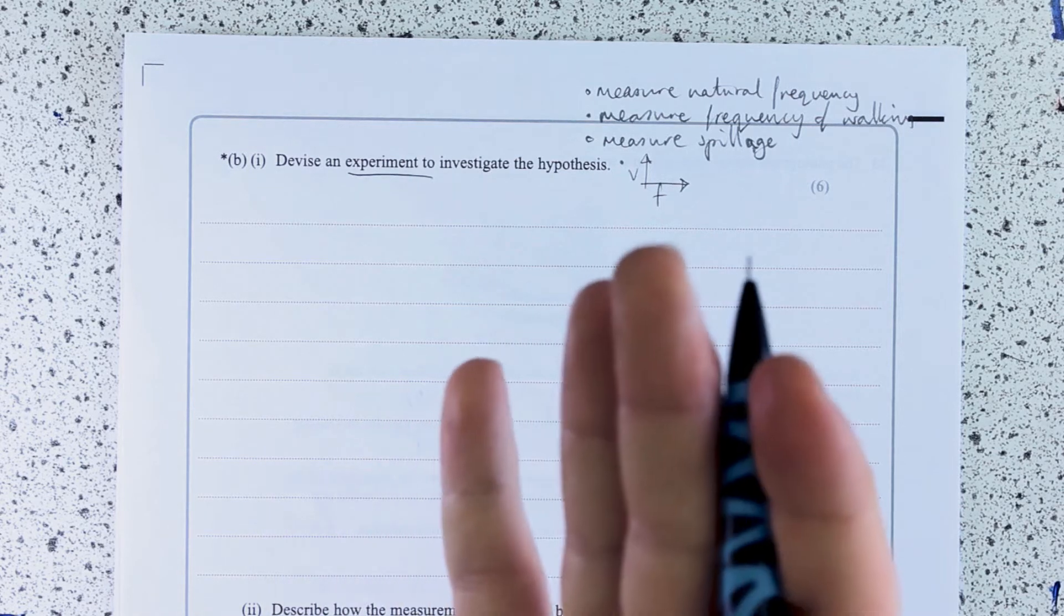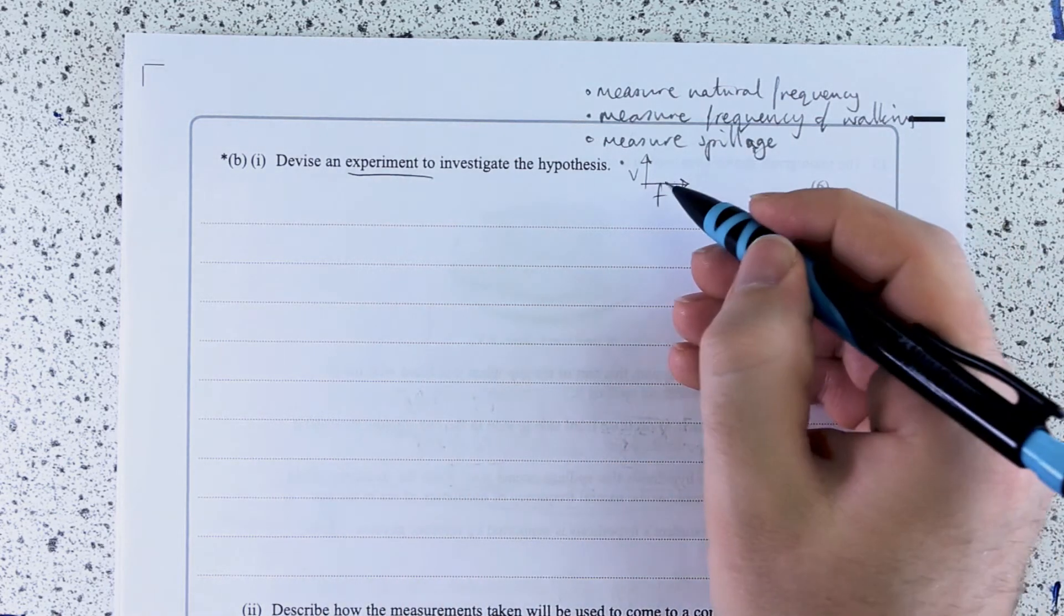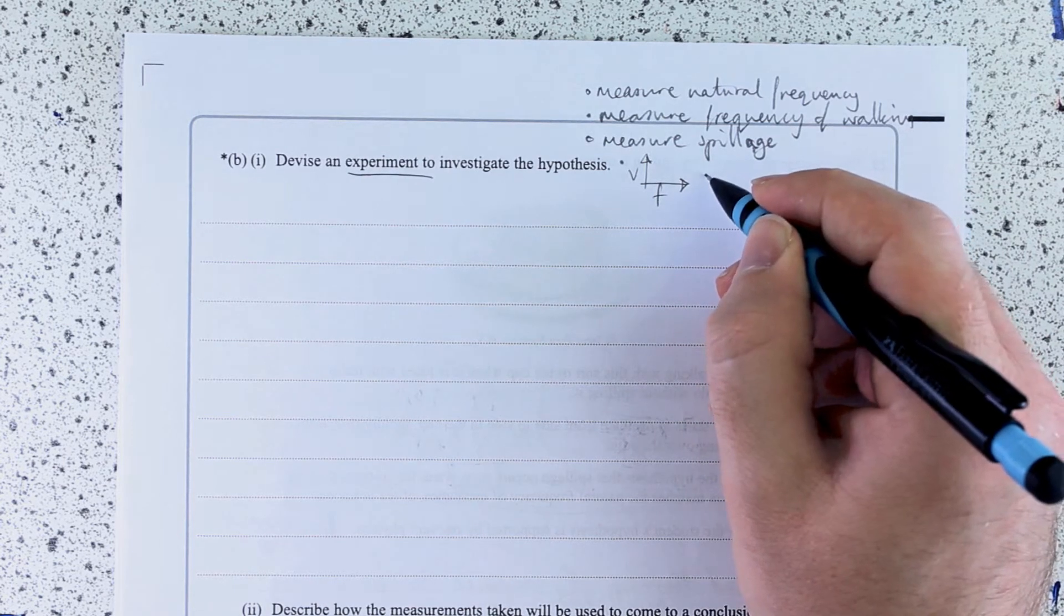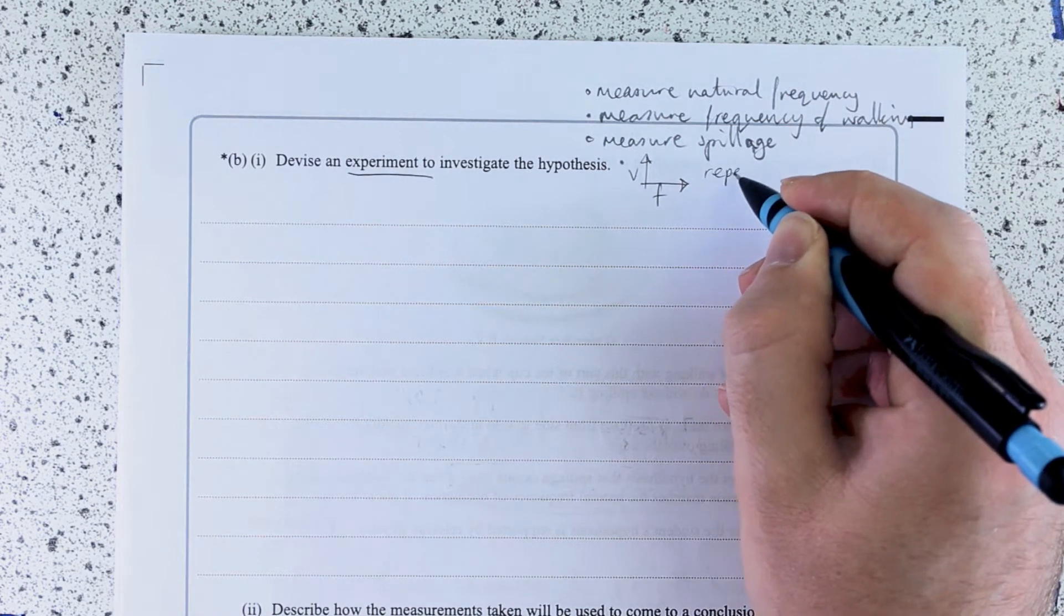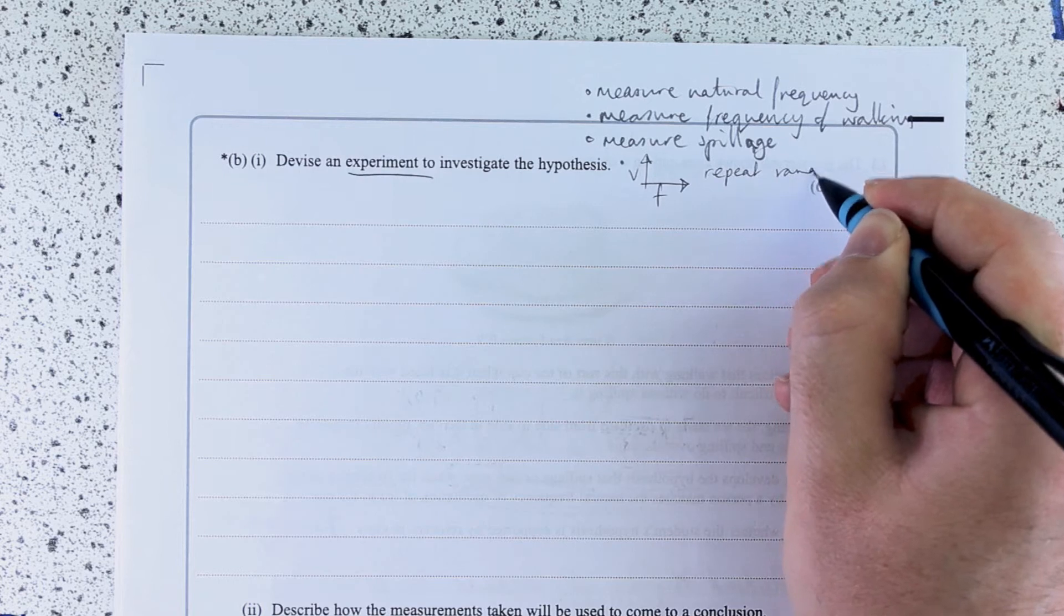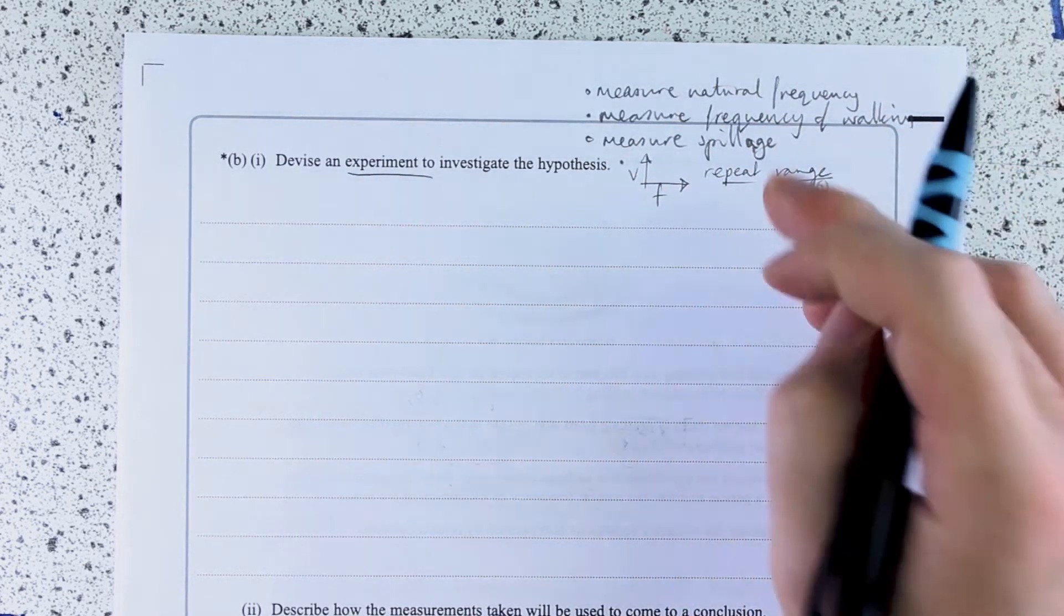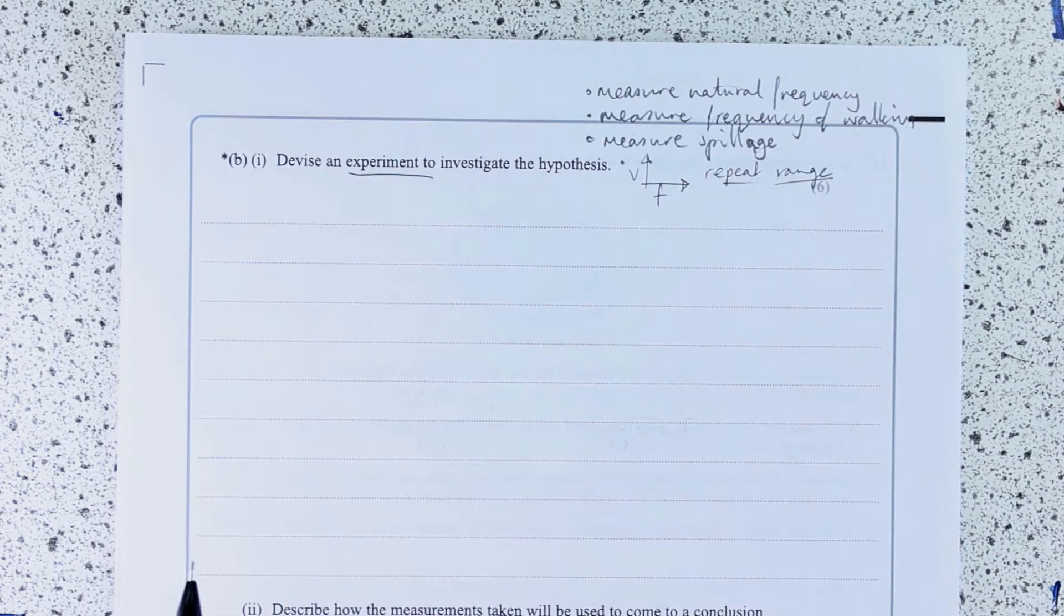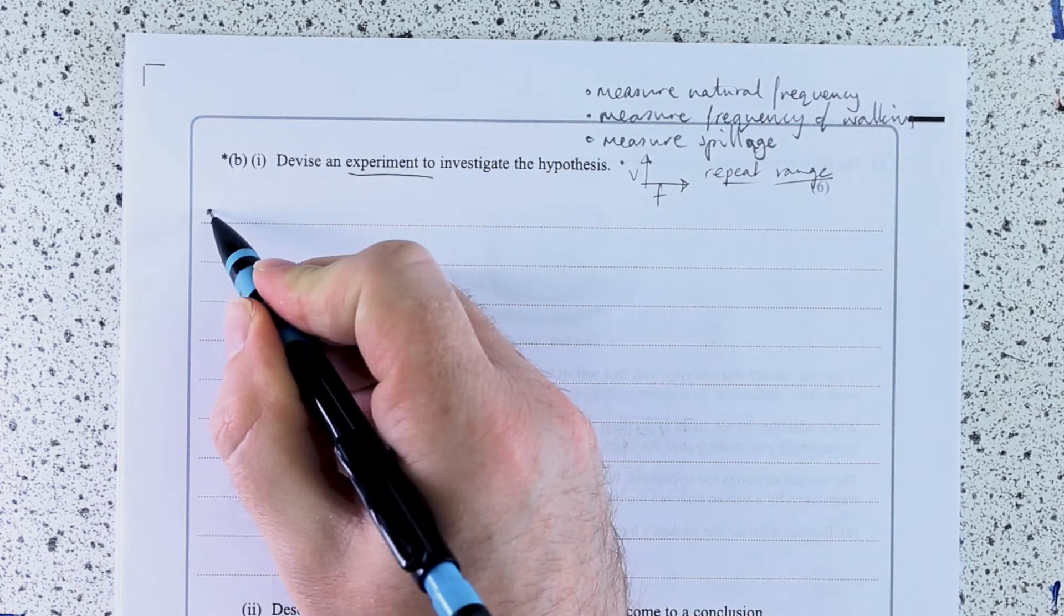Or I could just think about how can I make this reliable. Maybe just repeating or range or something like that. So these are the things I'm going to get in. This is my sort of free paragraphs that I'm going to try and write.